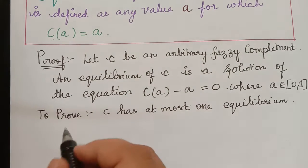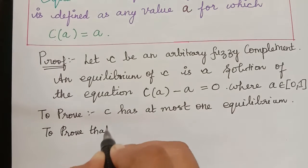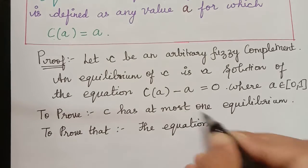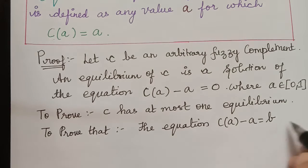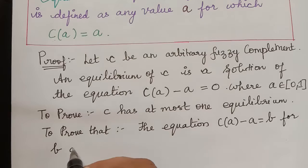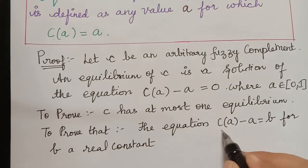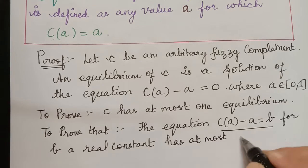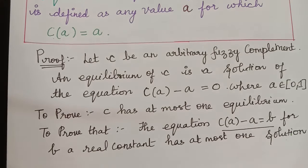In order to show that, we can also show that the equation C of A minus A equal to B, for B a real constant, has at most one solution. So we have to prove that this equation has at most one solution.